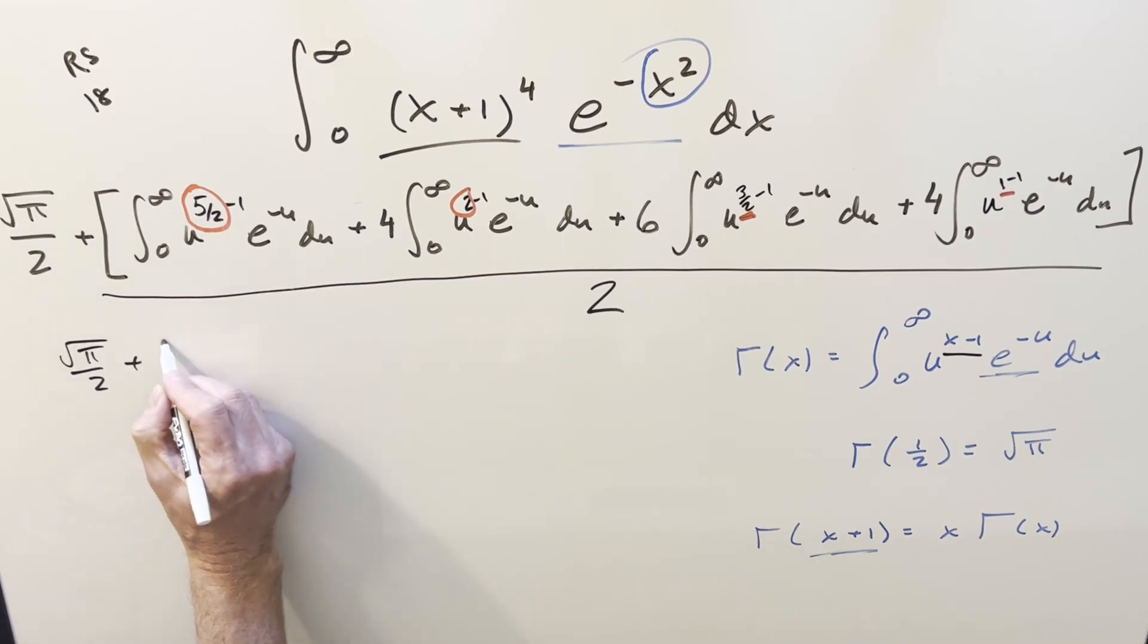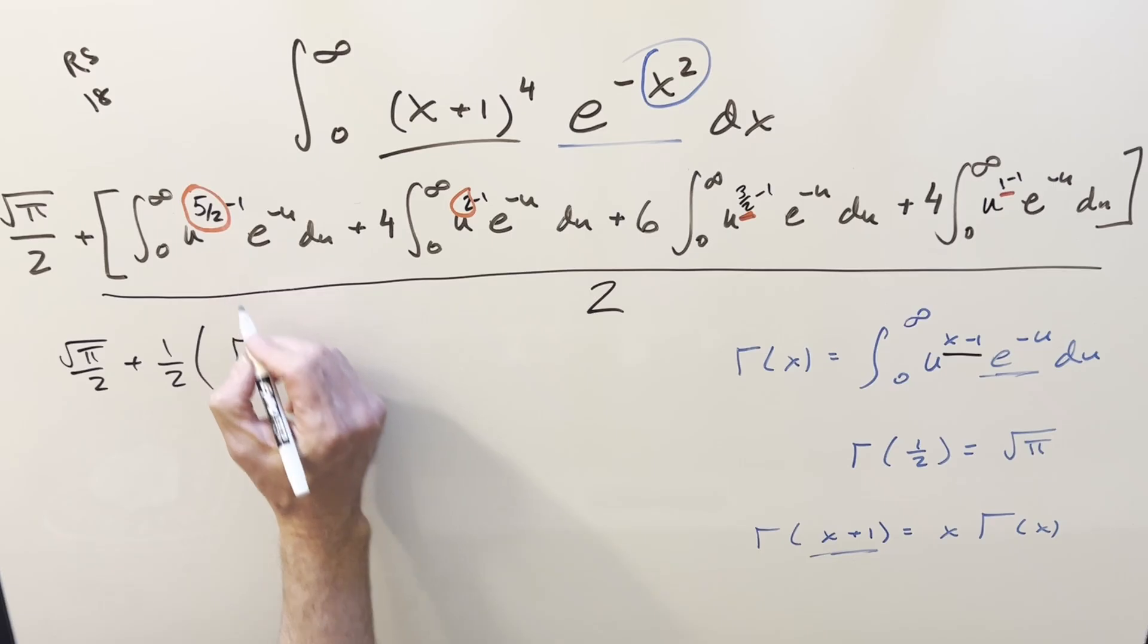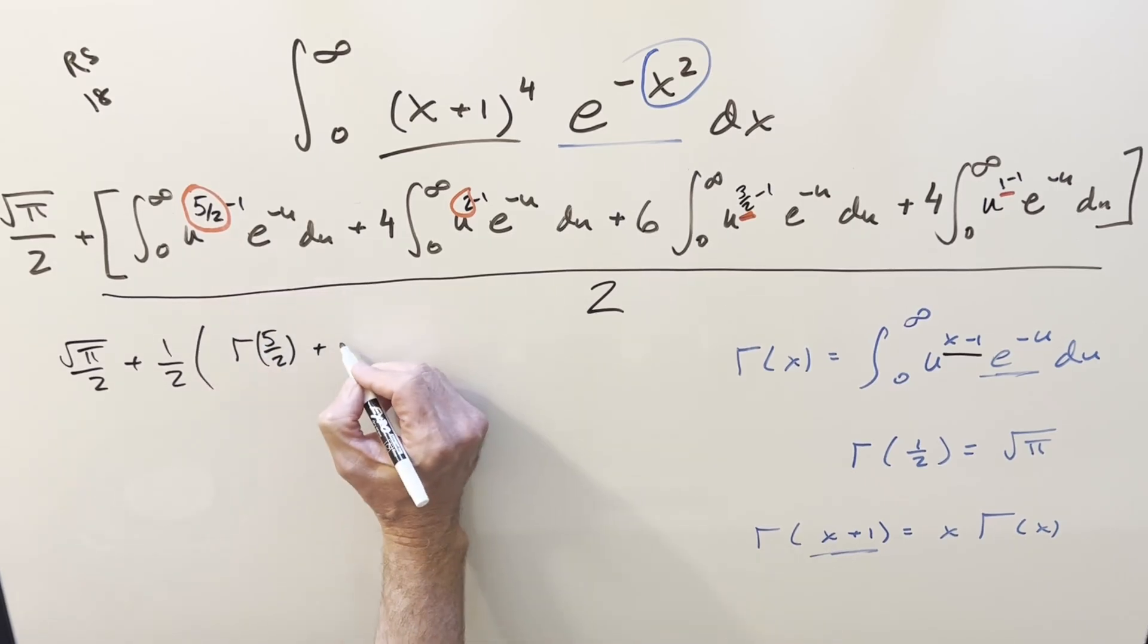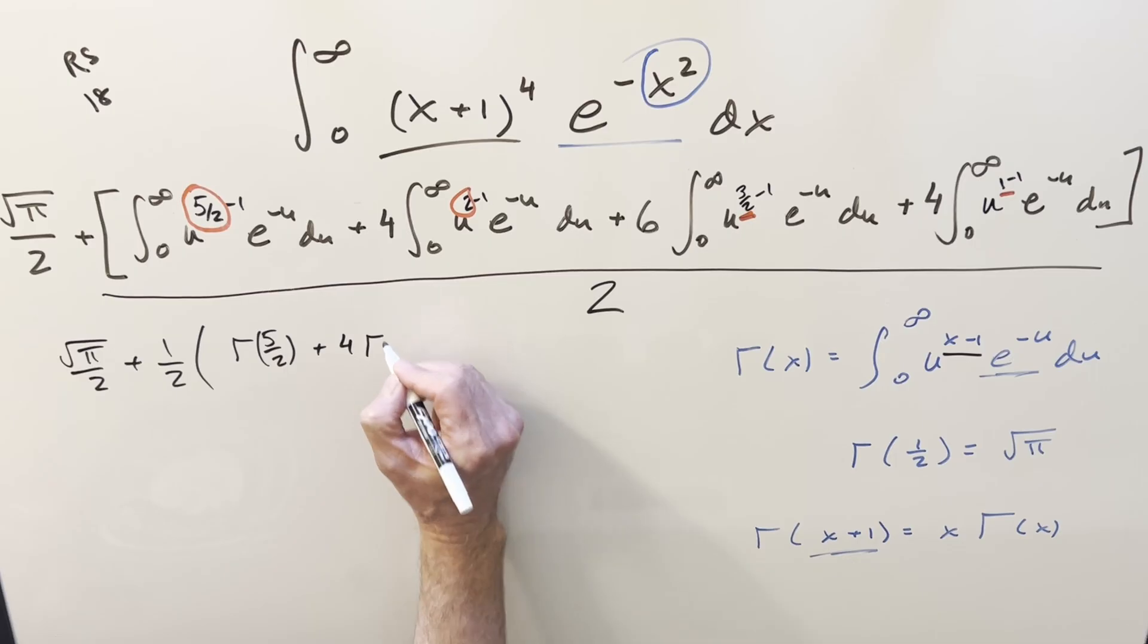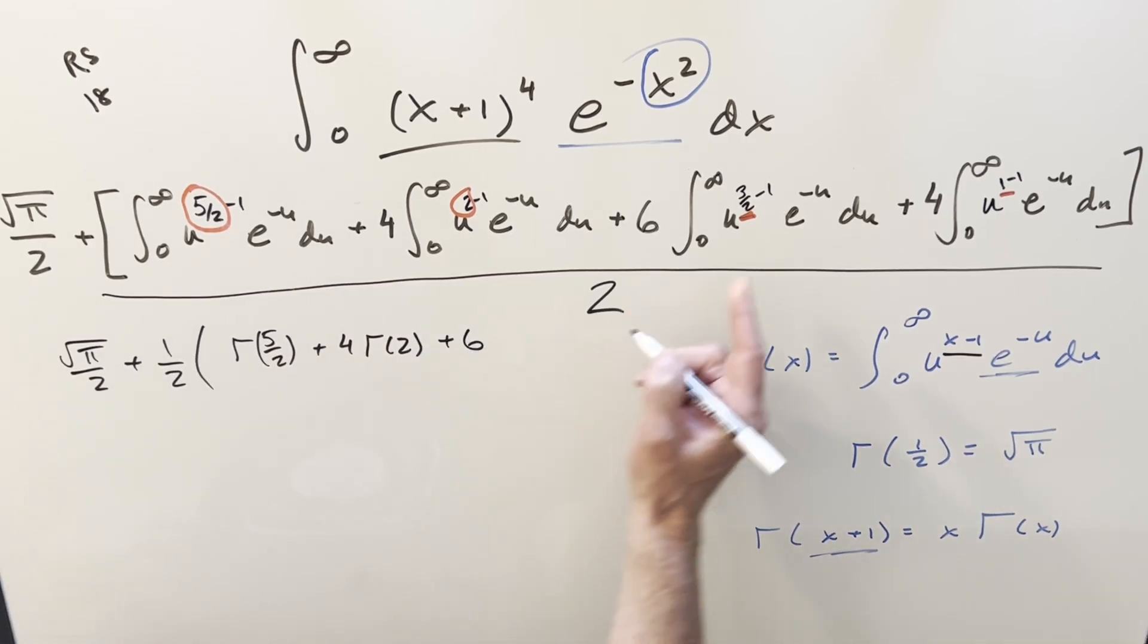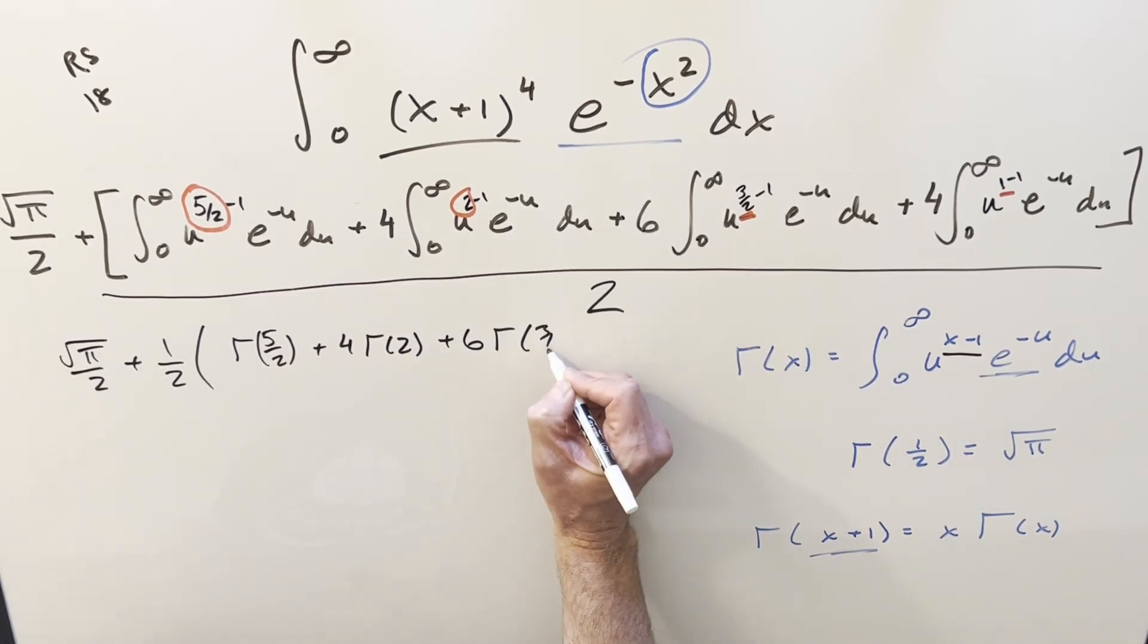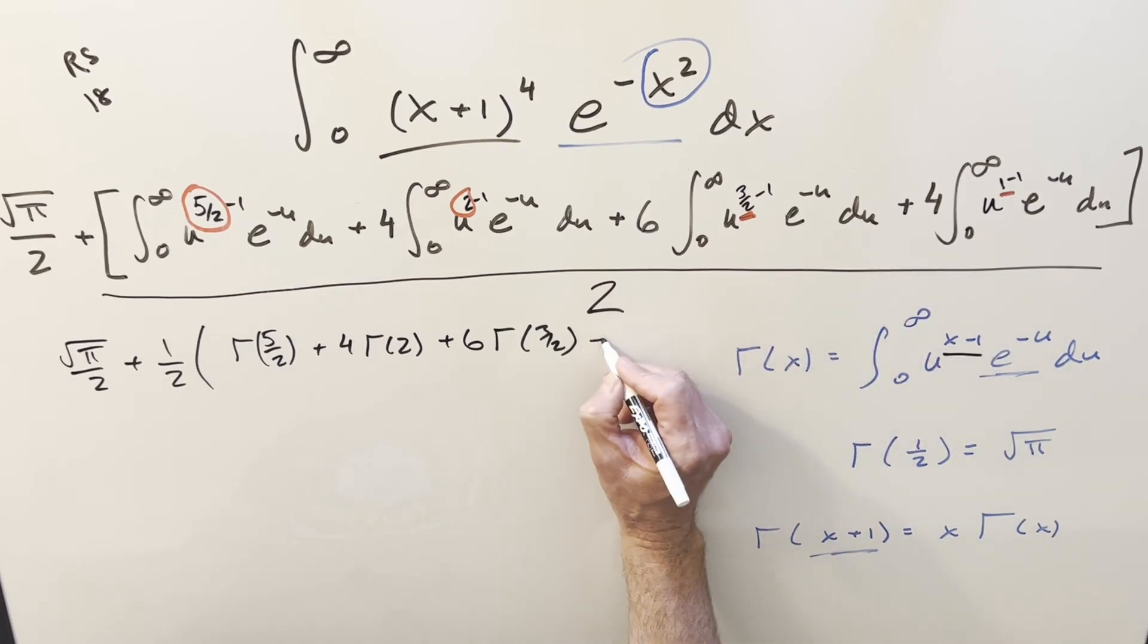So now let me rewrite it all in terms of the gamma function. So let's put this 2 back in front. So we're going to have 1/2. Then this one's going to be just gamma(5/2). This one, we've got a plus 4 gamma(2). Here we're going to have a plus 6 gamma(3/2). And here plus 4 times gamma(1).